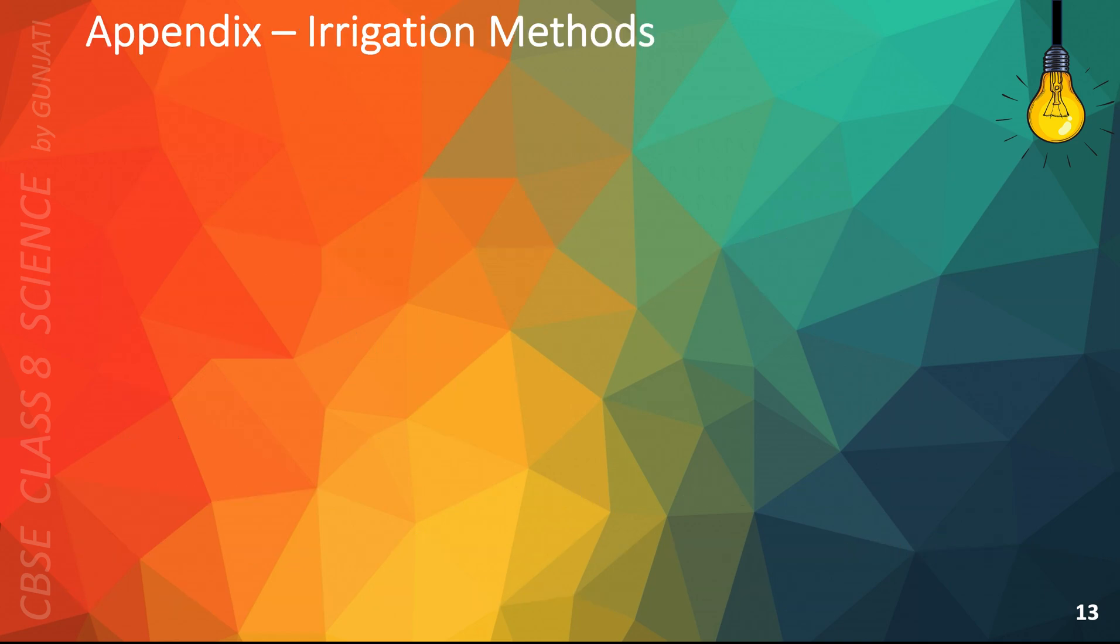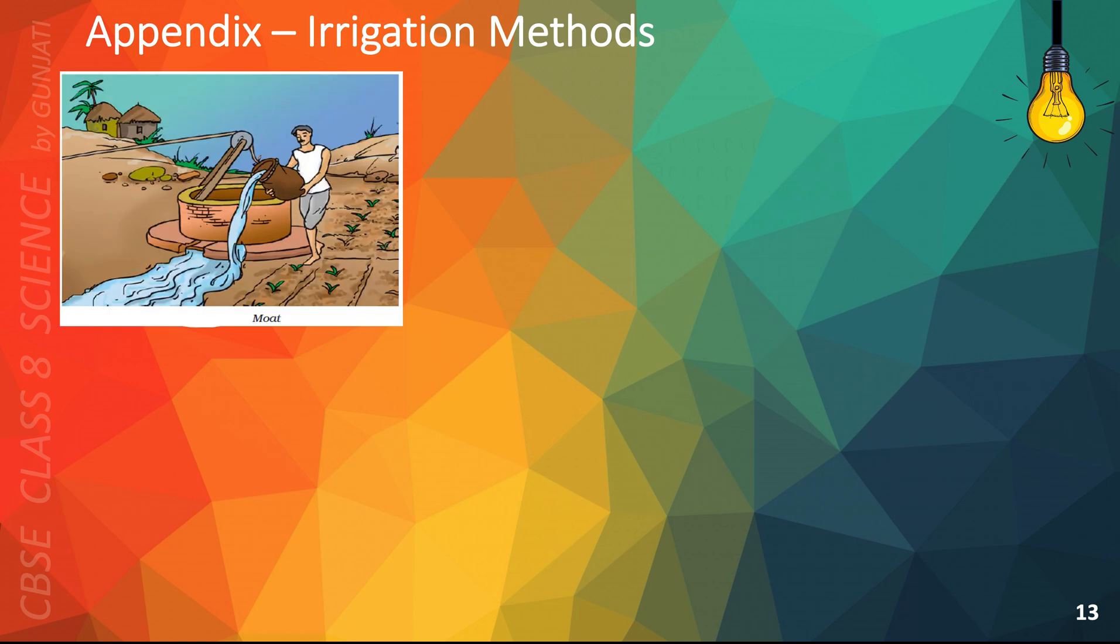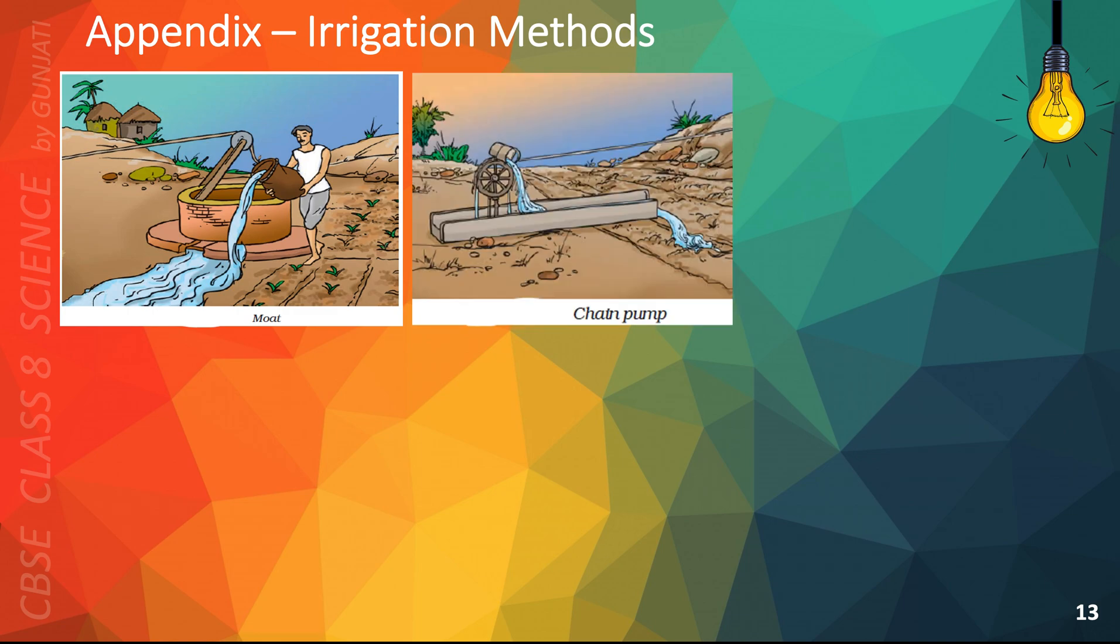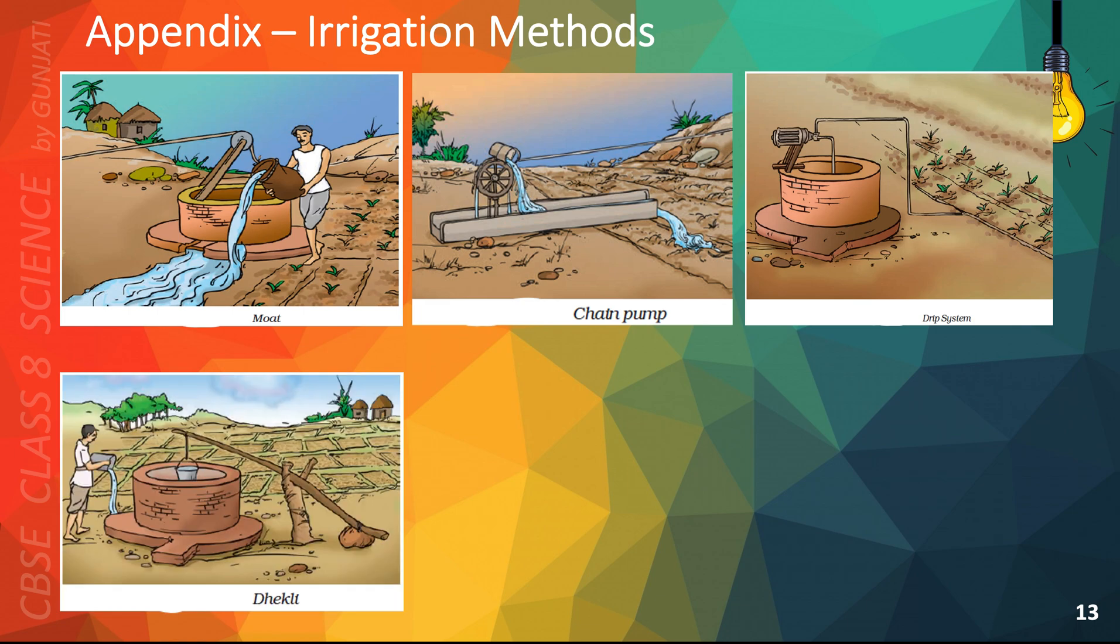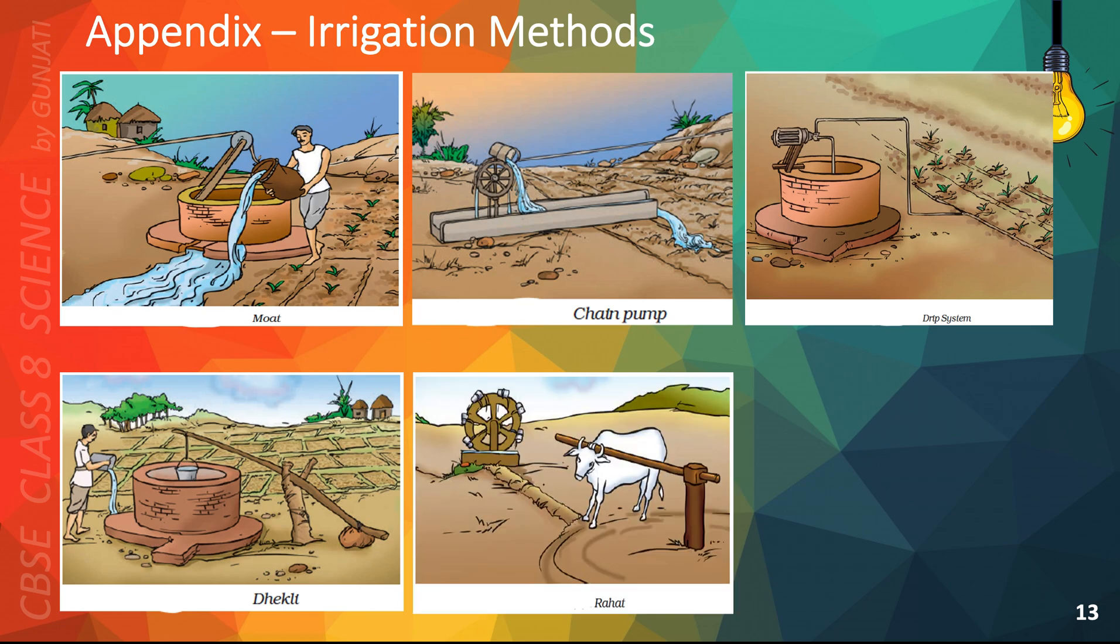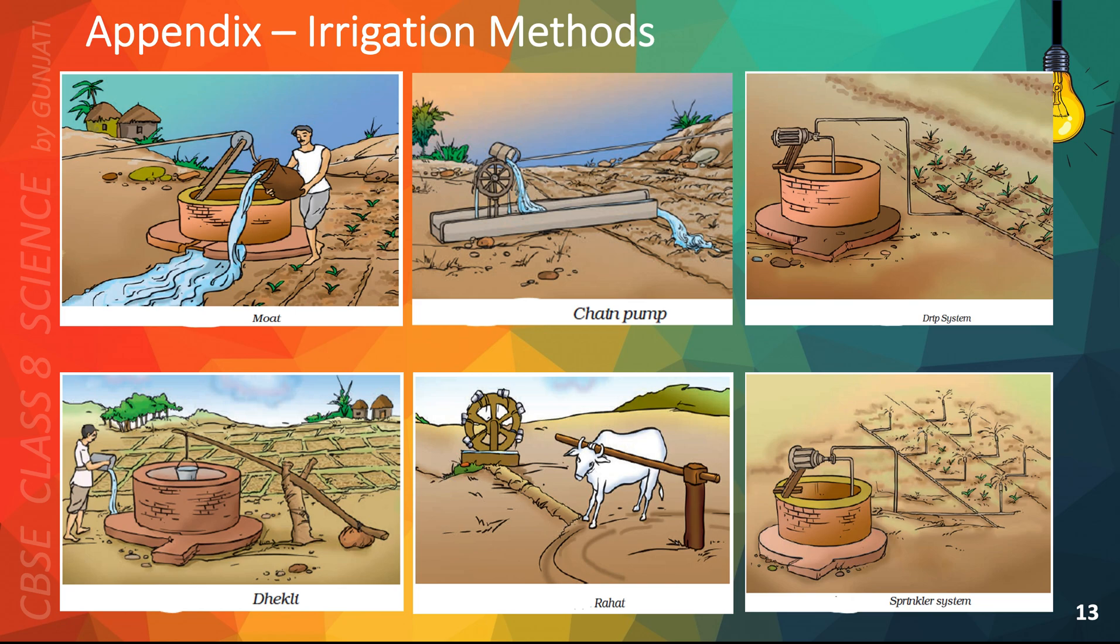The following are pictures of each irrigation system. This is the moat system. This is the chain pump system. This is the drip system. This is the Dhekli system. This is Rahat system. And this is the sprinkler system.